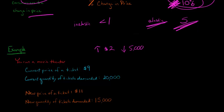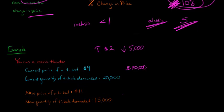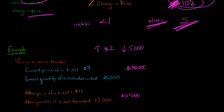You could look at the revenue impact: $9 times 20,000 means you originally had $180,000 in sales. Now you've got $11 times 15,000, which is $165,000 in sales. You might be thinking: I increased the price by $2 and yet somehow my sales ended up going down. So let's calculate the price elasticity of demand to understand why.